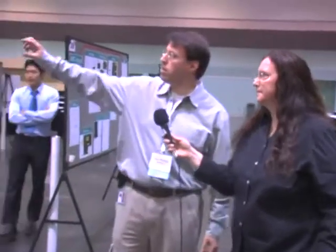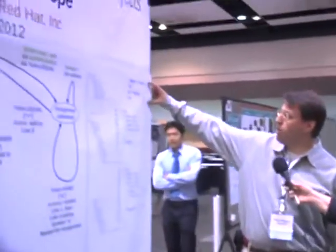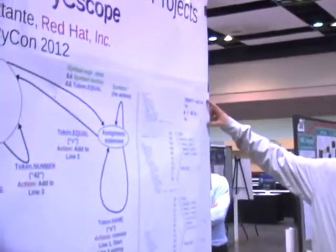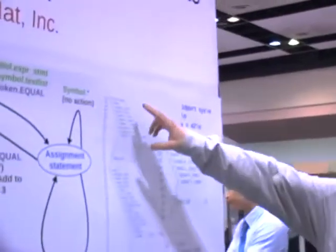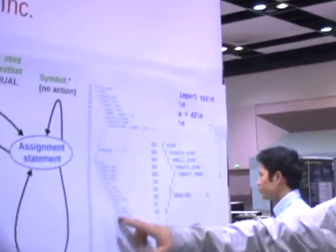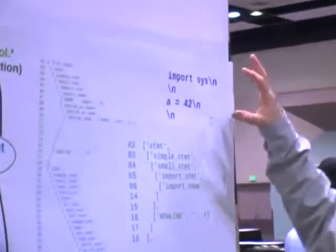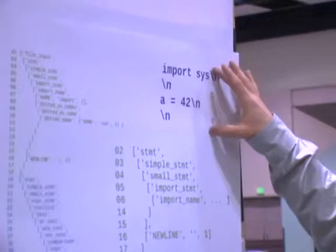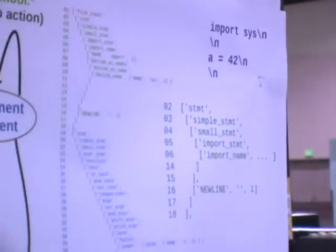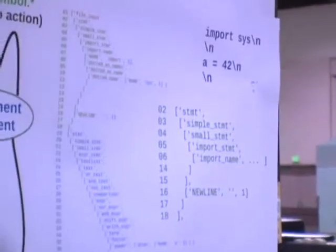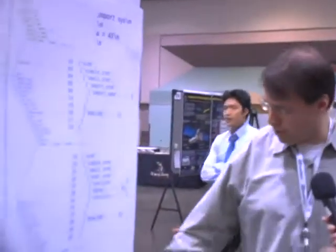What this is all about is there's a small four-line Python program right here. And this is the AST tree that's generated by the parser for that four-line program. And what I'm doing is I'm sort of breaking it down — this is how I learned the AST tree and what was going on.